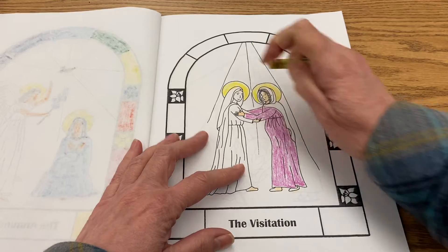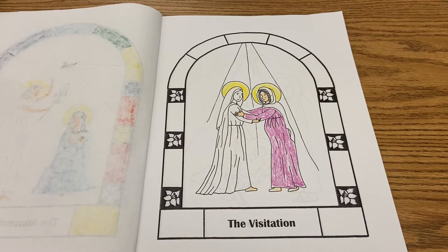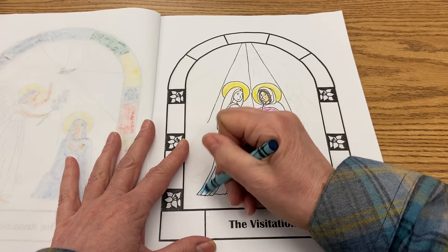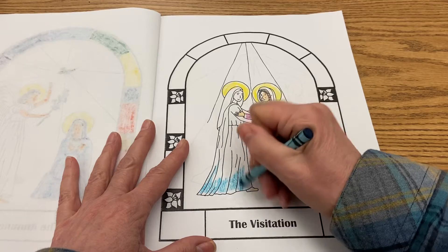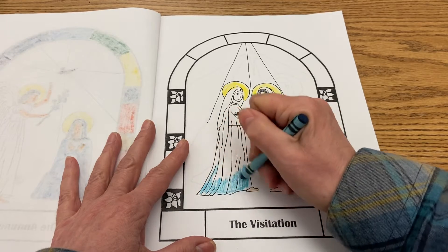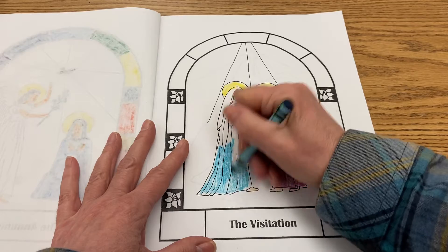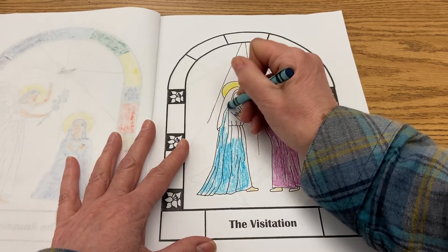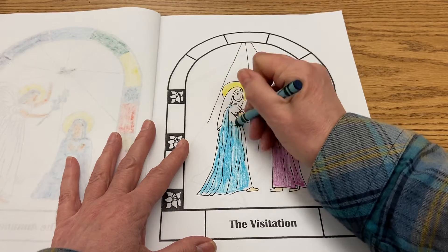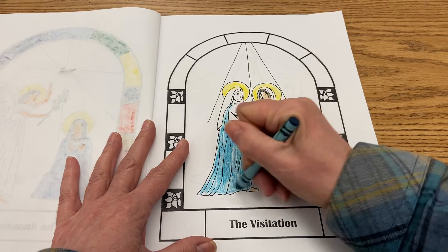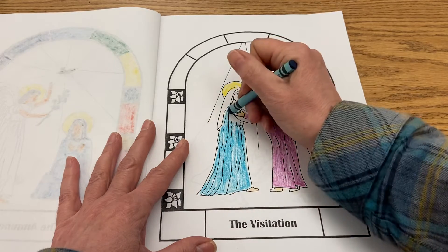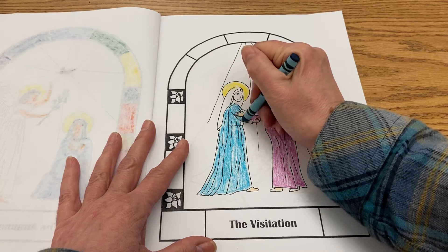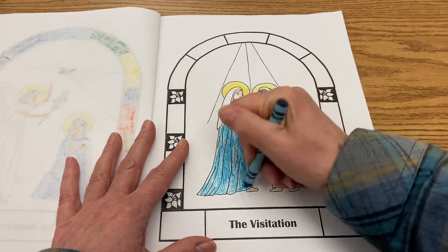At the bottom here it says 'The Visitation.' Then I'm going to color Mary's dress here. Remember, this is also a stained glass window. They usually use a lot of good colors in stained glass windows, so that you can see the reflection on the floor. A lot of churches — especially if you go to Europe, but also churches here — they do stained glass windows, and it was to help people tell the stories.